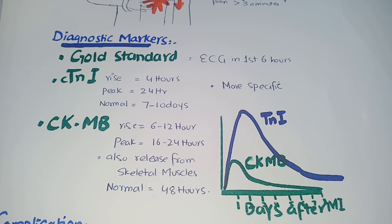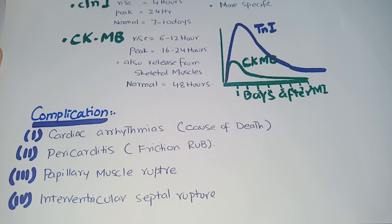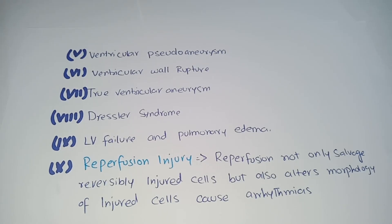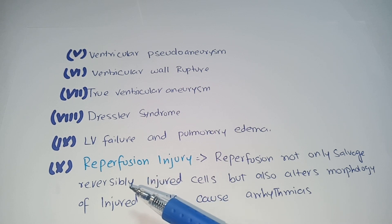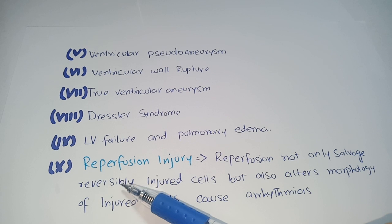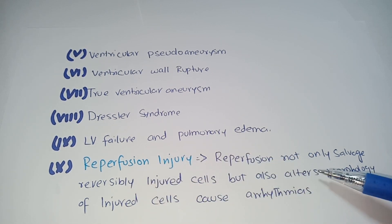Complications of myocardial infarction include arrhythmias. If not treated properly, it can result in pericarditis. As the infarcted wall is weak, pressure in the heart can lead to rupture or formation of an aneurysm. Another complication is reperfusion injury. Reperfusion can salvage reversibly injured cells, but it alters the morphology of irreversibly injured cells and ultimately causes arrhythmia. If reperfusion is given during the reversible stage, the changes will be reversed; however, if changes have converted to irreversible, it results in altered morphology.